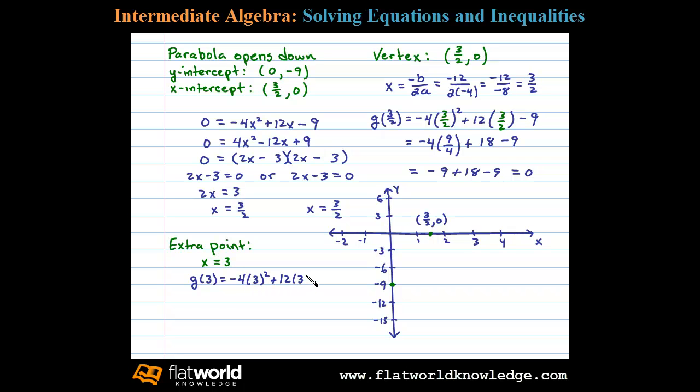Okay, so -4 times 9 plus 36 minus 9, or -36 plus 36 minus 9, and that gives us a result of -9. So that tells me the extra point we can use here is (3, -9). So (3, -9) gives us that third point.